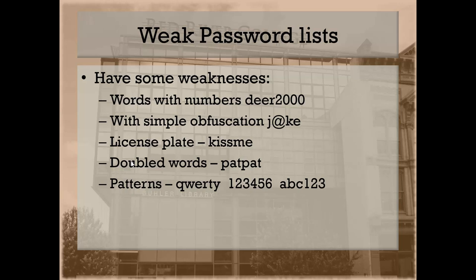People like to use easy things that are on their keyboard. For example, the top row from left to right of the first six characters: QWERTY. Nobody ever... of course people think of that. One, two, three, four, five, six. A, B, C. QAZWSX is another popular one — the characters along the left two columns of your keyboard.